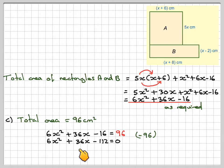Now, we notice we have 6, 36, and 112. They're all even numbers, so we're going to divide the quadratic by 2. So that gives 3x² + 18x - 56 = 0. You even do 0 divided by 2, which is 0. Please don't forget that.